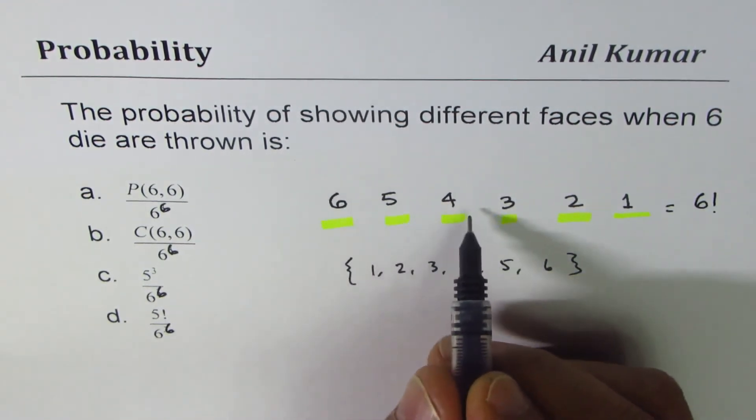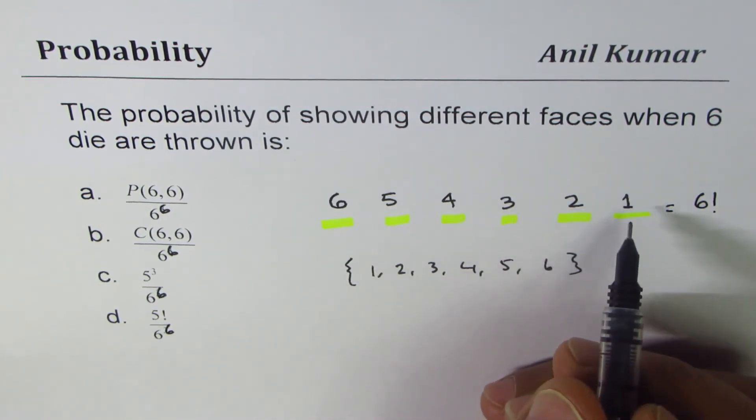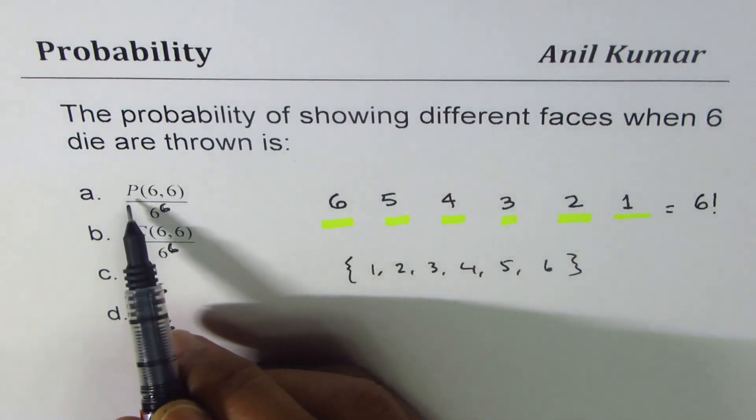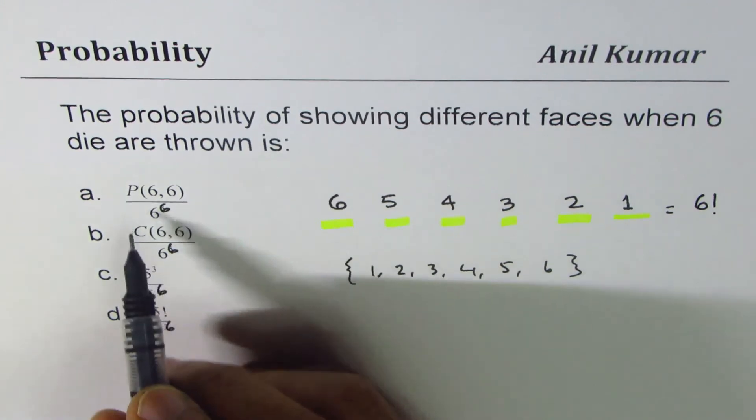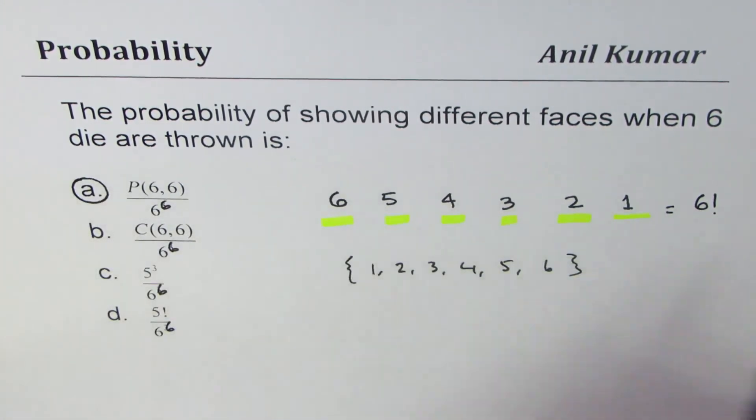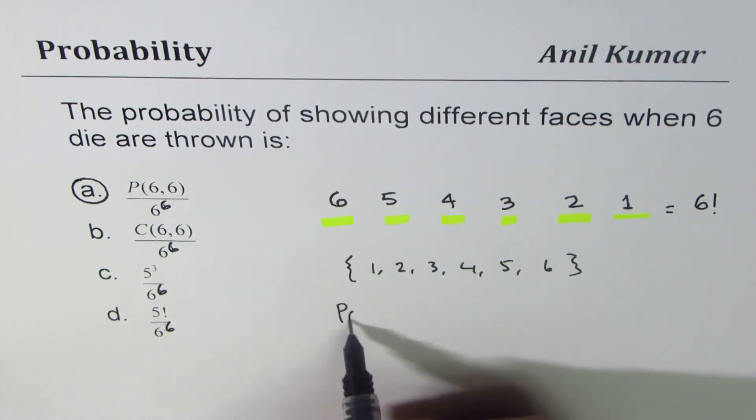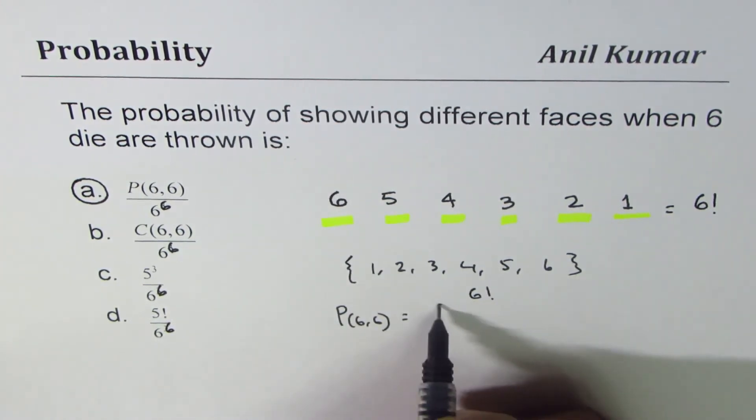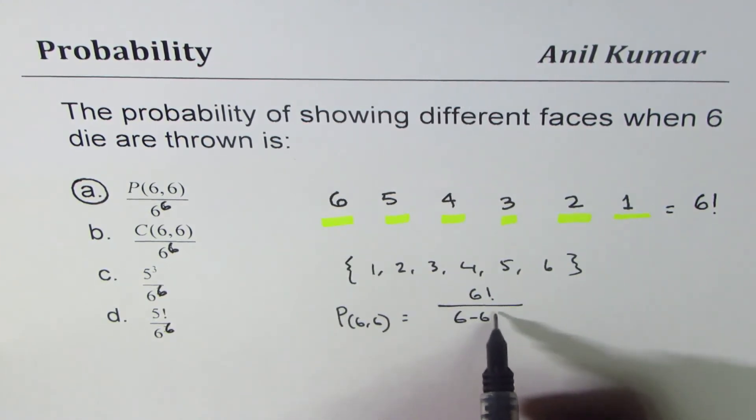Six times five times four times three times two times one. In terms of permutations, the permutation P(6,6) is actually six factorial, right?